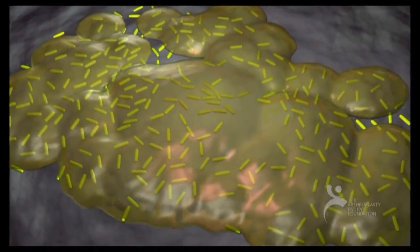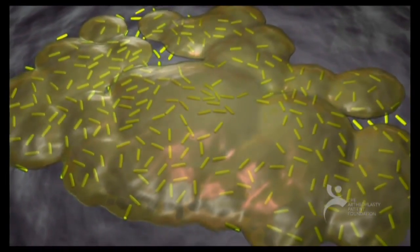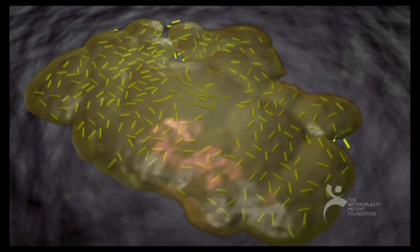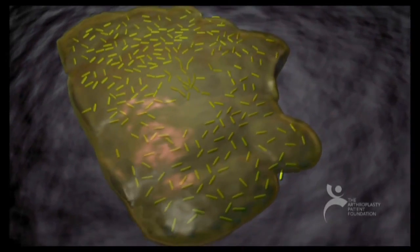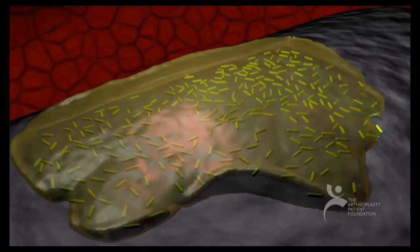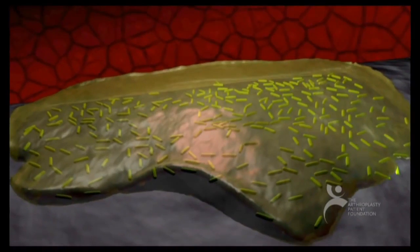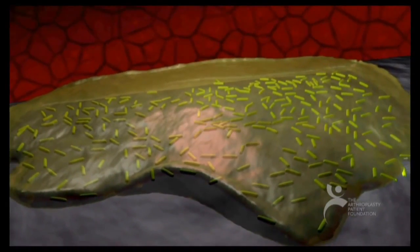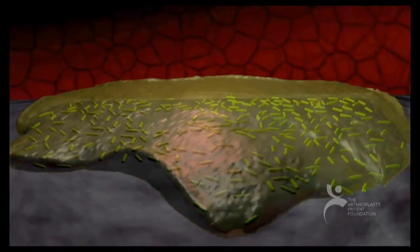Cells now communicate via quorum sensing and use small molecules to regulate gene expression within the bacteria. The community grows through both cell division and recruitment. The development of this complex biofilm makes the community resistant to the immune response and antibiotics.